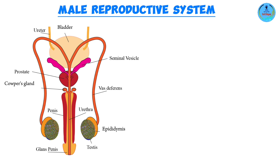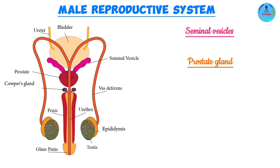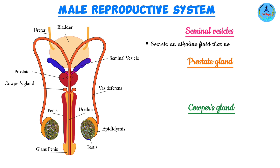There are three accessory organs in the male reproductive system: the seminal vesicles, the prostate gland, and the Cowper's glands. The seminal vesicles are located a short distance away from the urethra and secrete an alkaline fluid that nourishes the sperm by providing the necessary nutrients. This is possible because they contain nutrients such as carbohydrates — especially in the form of fructose — amino acids, vitamins, and so on.